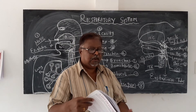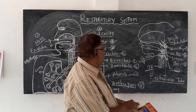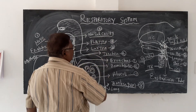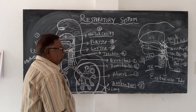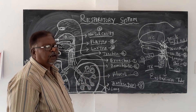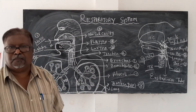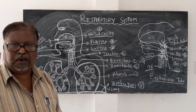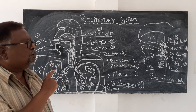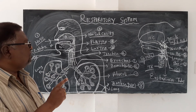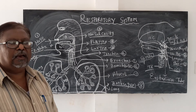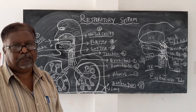Tomorrow we will study about the larynx, which is the third part of the respiratory system. We have already learnt about the nasal cavity and pharynx. After the larynx, we will cover the trachea, bronchus, and alveoli. The organs in order are: nose, nasal cavity, pharynx, larynx, trachea, bronchus, bronchioles, alveoli, and diaphragm.